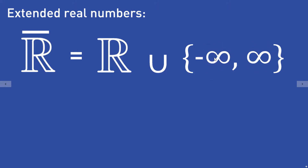This set is then called the extended real numbers, written as R with a bar. And you will see that when considering the extended real numbers, a lot of things will become easier, especially when considering sequences and sums.